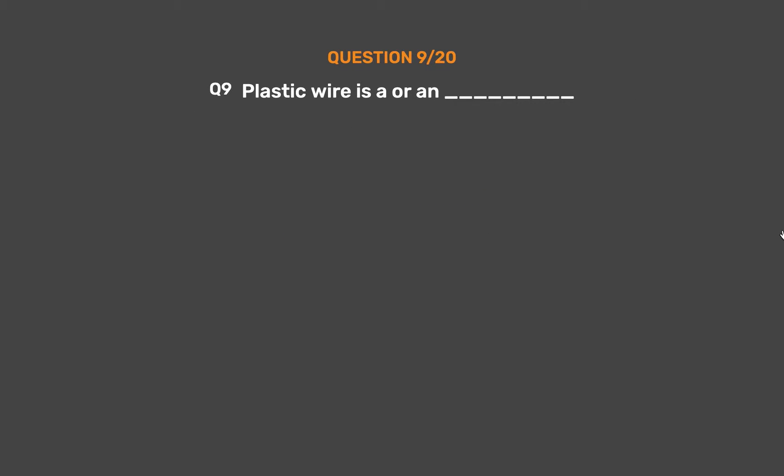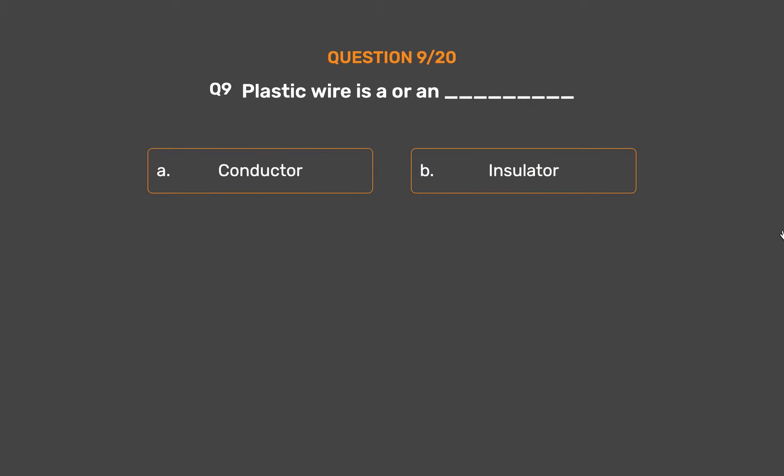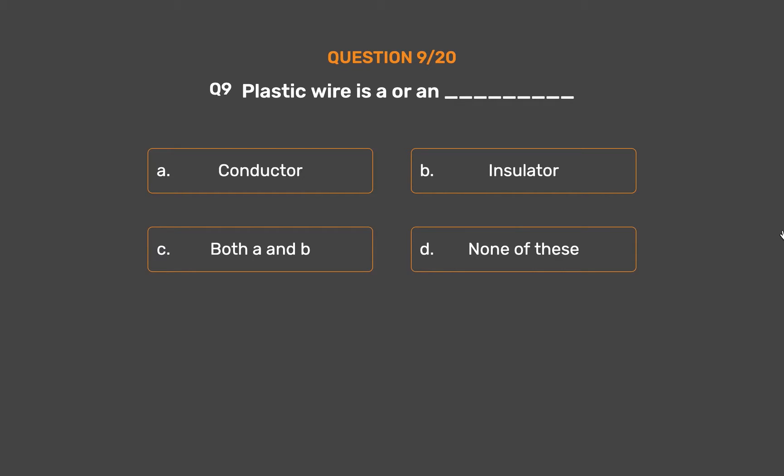Question No. 9: Plastic wire is a or an underscore. Option A: Conductor. Option B: Insulator. Option C: Both A and B. Option D: None of these.